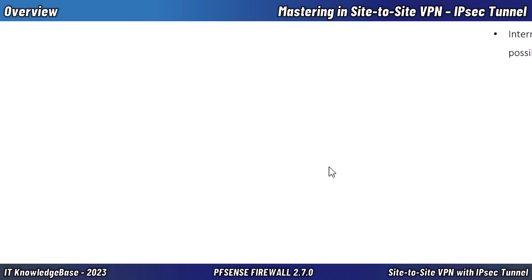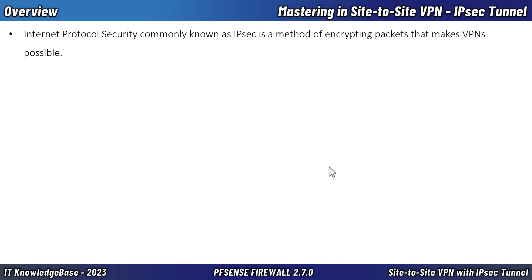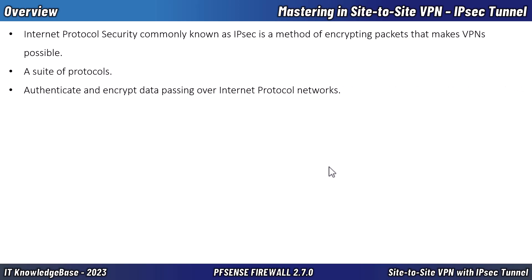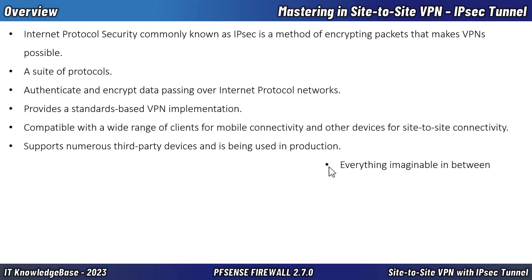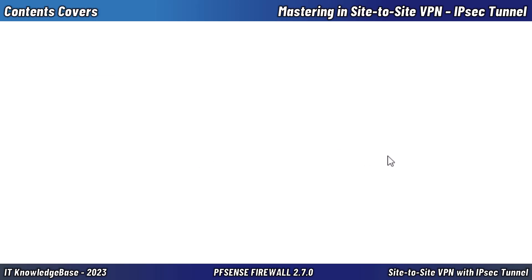Introduction to site-to-site VPN over IPSec: Internet Protocol Security, commonly known as IPSec, is a method of encrypting packets that makes VPNs possible. IPSec is a suite of protocols that can authenticate and encrypt data passing over IP networks. It provides a standard-based VPN implementation compatible with a wide range of clients and devices, from consumer-grade Linksys routers up to IBM z/OS mainframes.